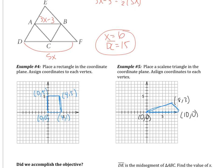Remember that a scalene triangle has no congruent sides. So that's it. Those are the coordinate proofs that we're doing.